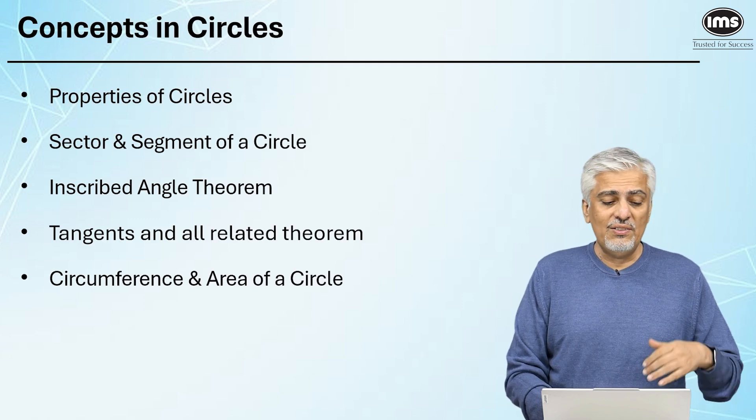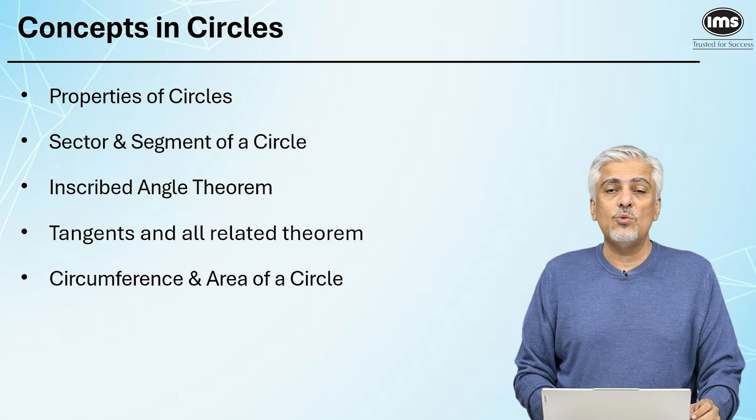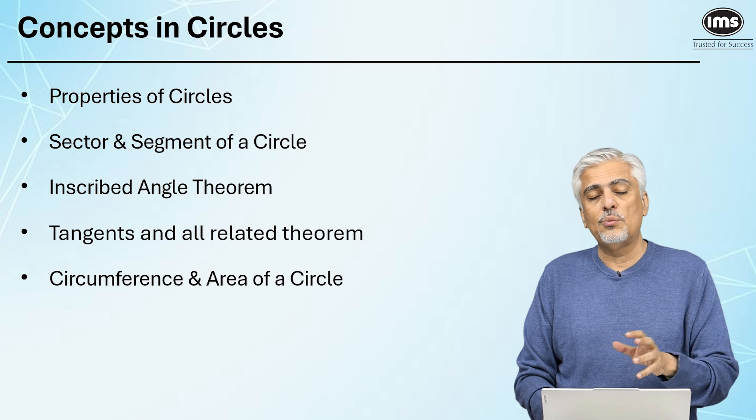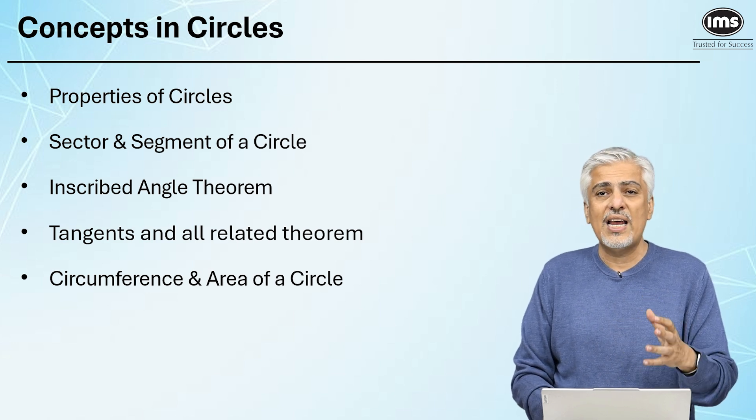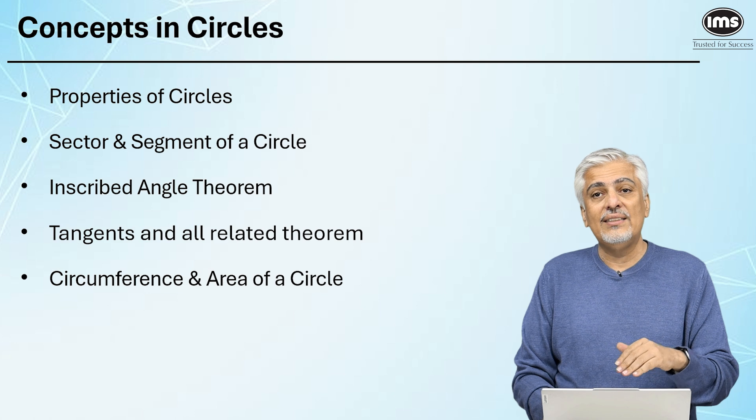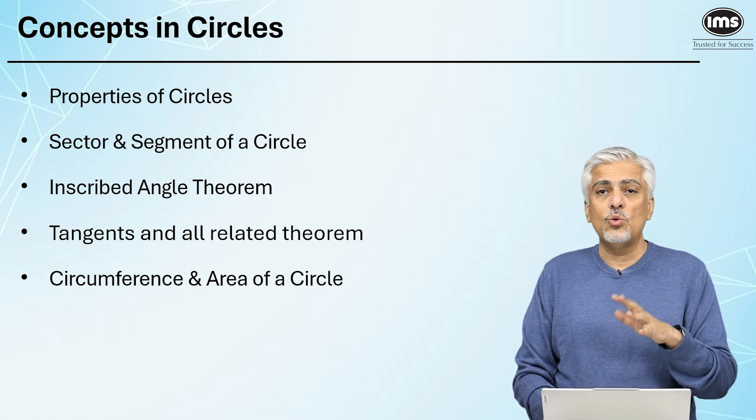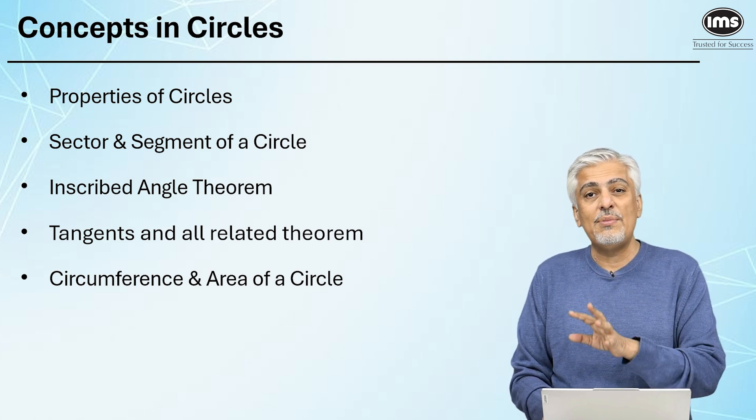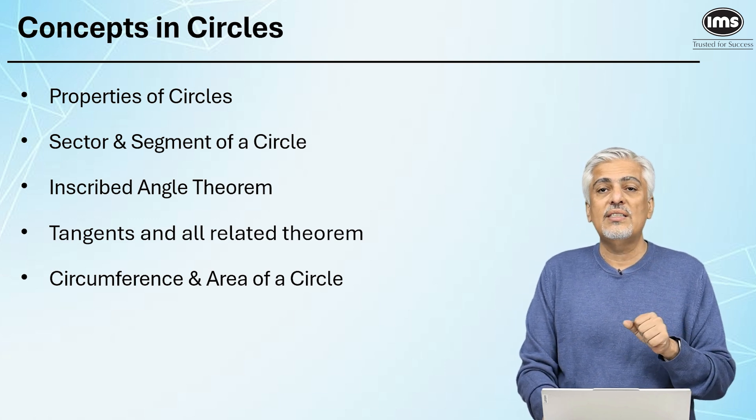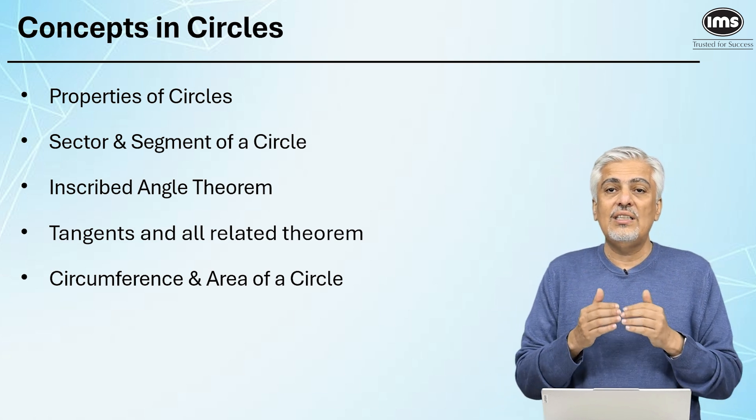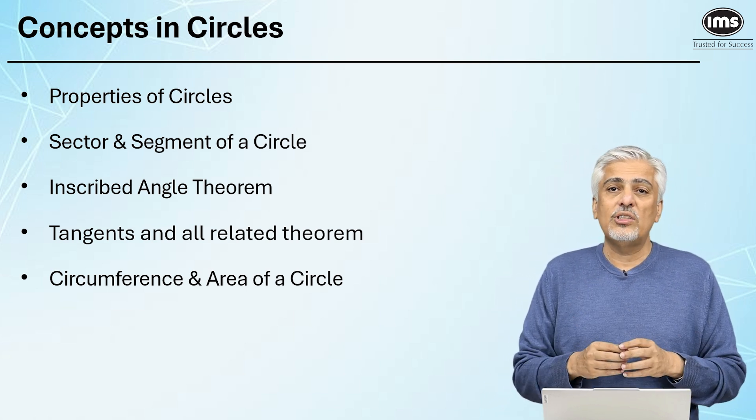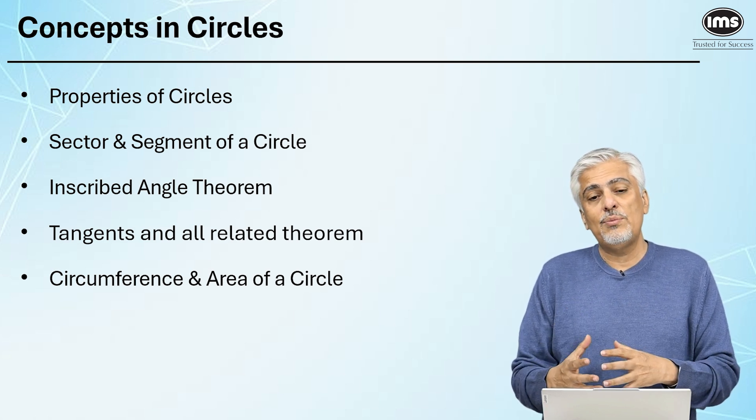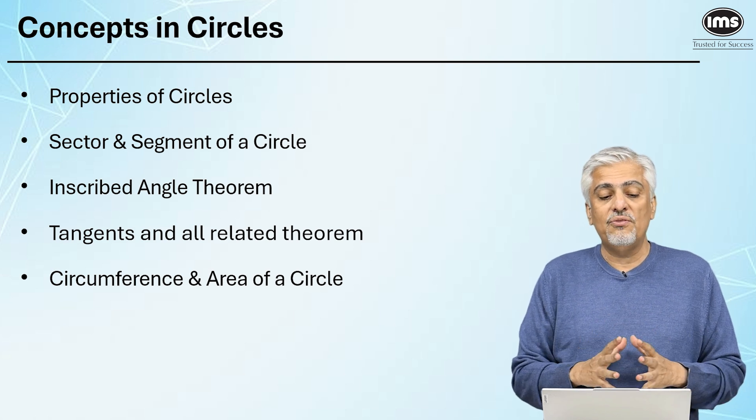Concepts in circle. Now circle, even though I've written down only five concepts, according to me, it is one topic which has the most number of concepts. You really need to know a lot of concepts. Properties of circles, here you need to know what is radius, what is diameter, what is tangent, what is secant, what is a chord and so on. Then comes the sector and the segment, what part of the circle. Half the circle is a semicircle, some part of the circle is a sector, then some part of the area of the circle is a segment, and so on. The formulas for that, finding how to find the area of a sector, how to find the area of a segment, all those things can be really very important. Hence you need to know that very well.